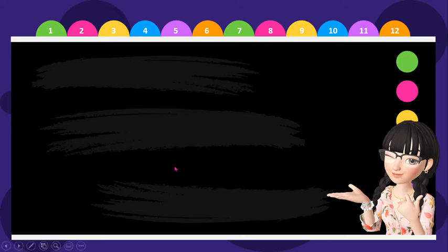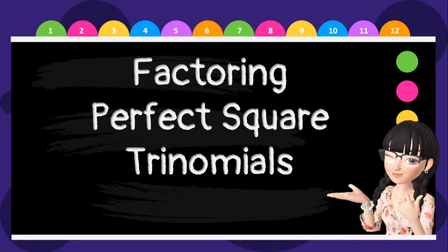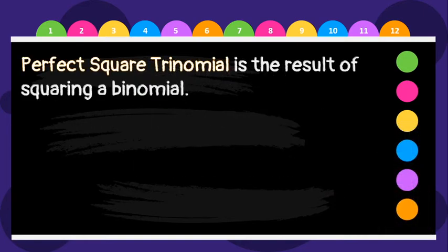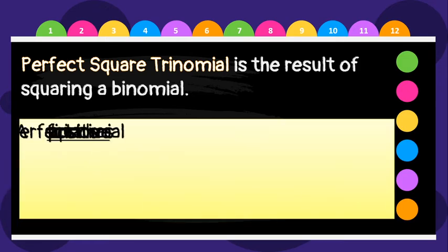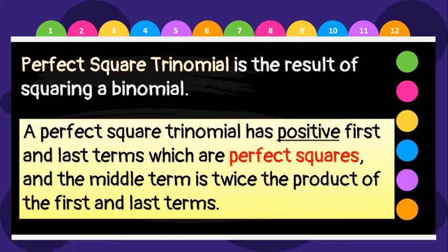Hello students, today we're going to discuss factoring perfect square trinomials. A perfect square trinomial is the result of squaring a binomial. It has positive first and last terms which are perfect squares, and the middle term is twice the product of the first and last terms.